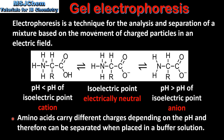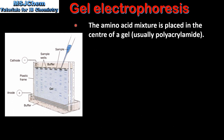So amino acids carry different charges depending on the pH and therefore can be separated when placed in a buffer solution. We will start by looking at the steps in gel electrophoresis. The first step is the amino acid mixture is placed in the center of a gel. The gel is usually polyacrylamide.